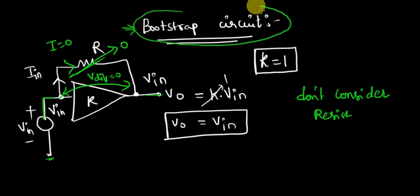This is called a bootstrap circuit, which is possible only when the gain of the amplifier is positive and is equal to 1.